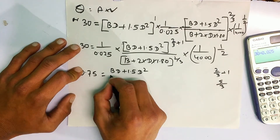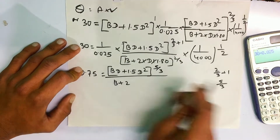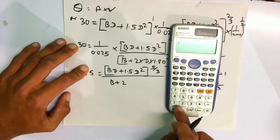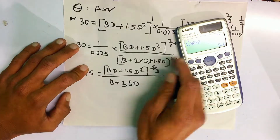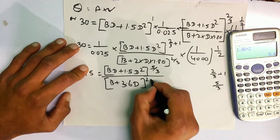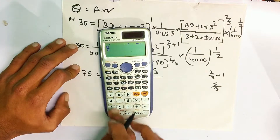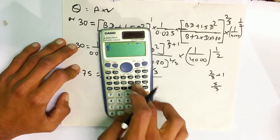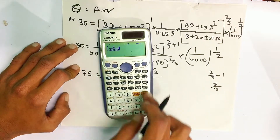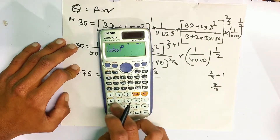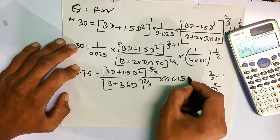Five by three, in terms of D plus 1.5 D squared to the power of 5/3, and the perimeter B plus 2 times 1.80 times two giving 3.6 D, to the power of 2/3. This is 1 divided by 4000. This is how much we can do: 4000 gives 1 divided by 2000, which is 0.015. This is how we calculate.